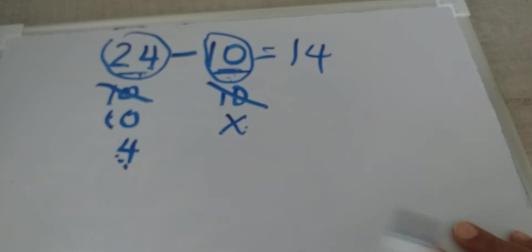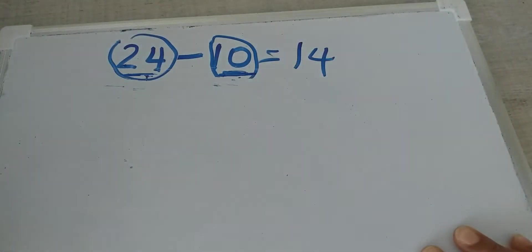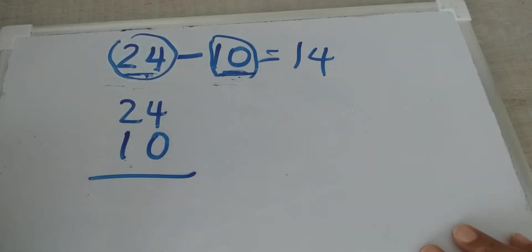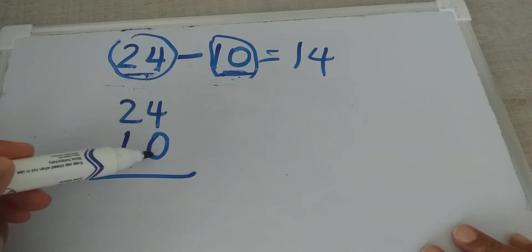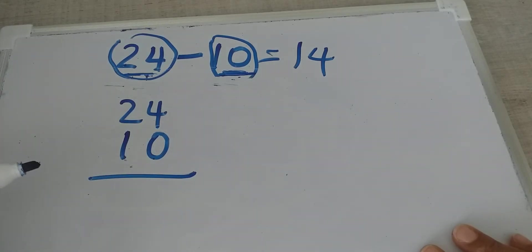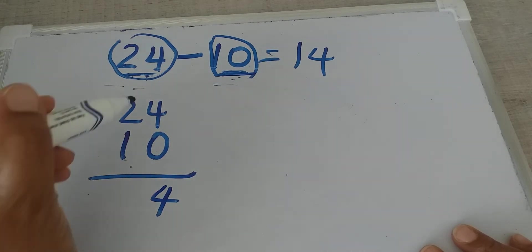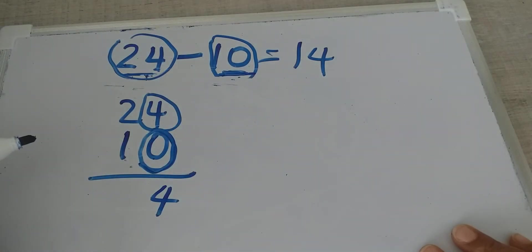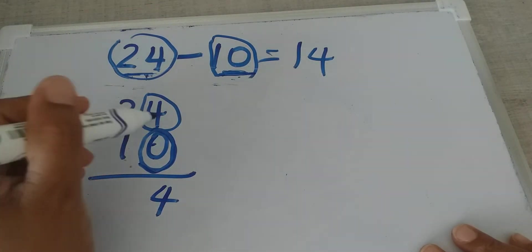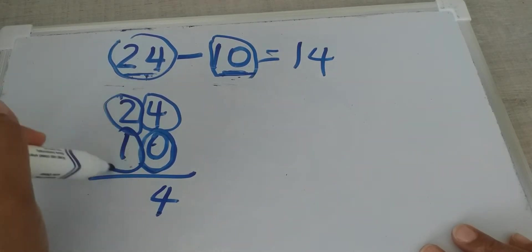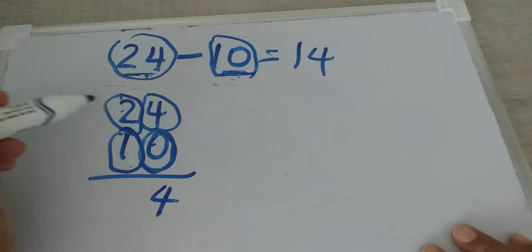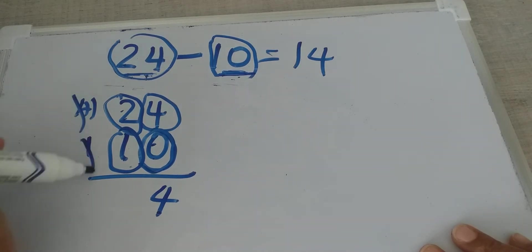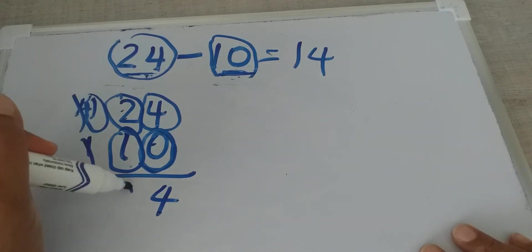Another method for 24 minus 10: look at the ones place — 4 minus 0 equals 4. Now the tens place: 2 minus 1. How many ones are in the tens digit? Just 1. I take one away, what is left? 1. So the answer is 14.